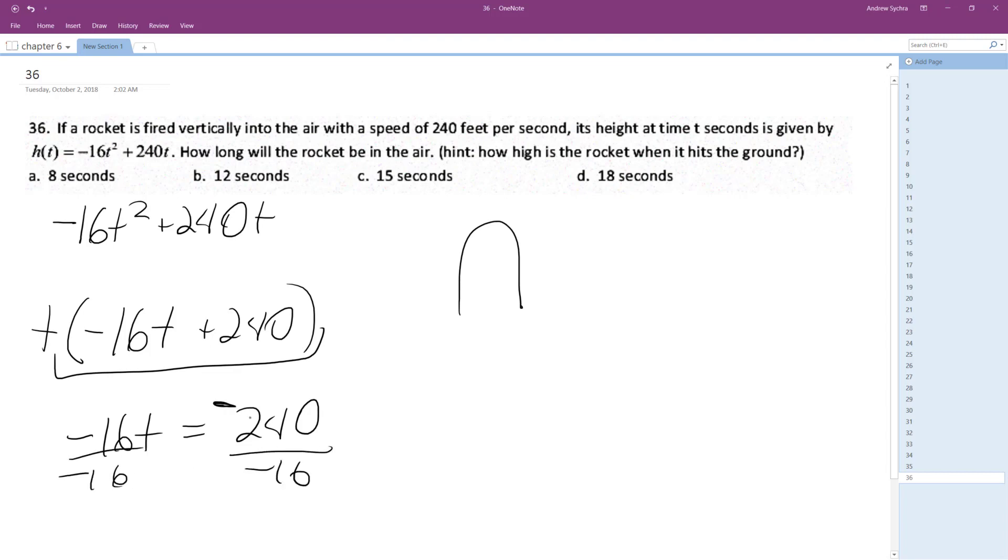Divide through by negative 16, and this should be negative 240. 240 divided by 16, I have no idea, but it looks like 15 seconds.